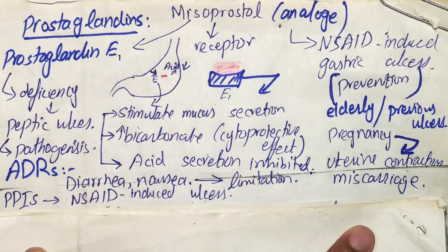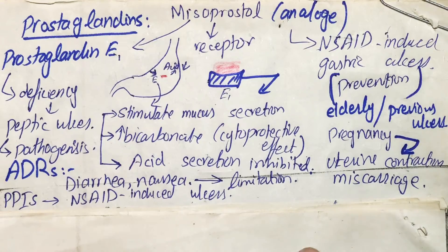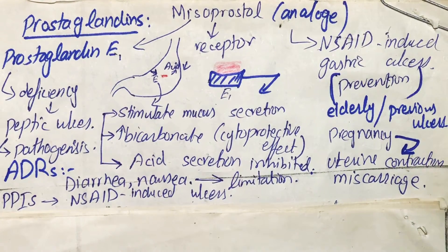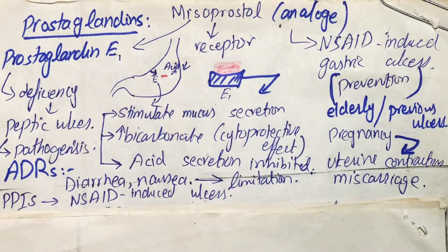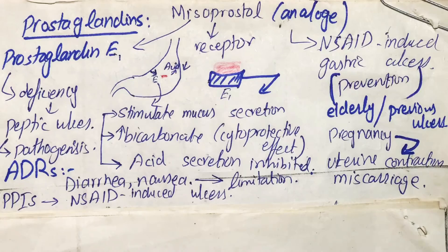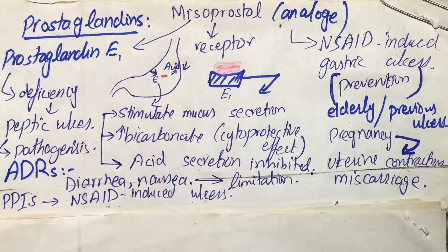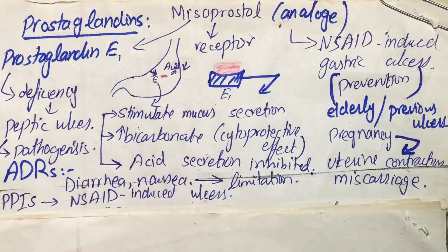Misoprostol is contraindicated in pregnancy because it can cause uterine contractions and also miscarriage, so it should be completely avoided. The ADRs of misoprostol are mostly dose-related, which are diarrhea and nausea, and these cause the limitation of this agent. Therefore, proton pump inhibitors are preferred over misoprostol for the prevention or treatment of NSAID-induced ulcers.